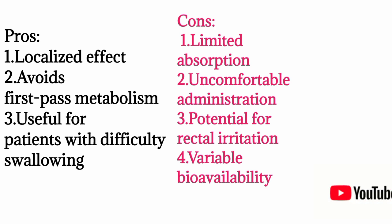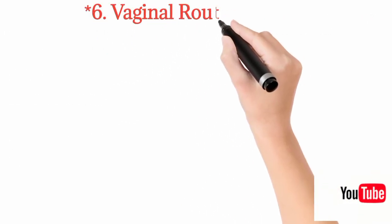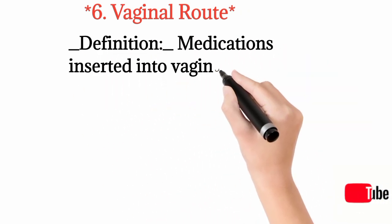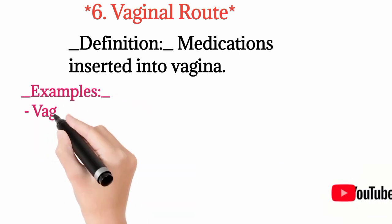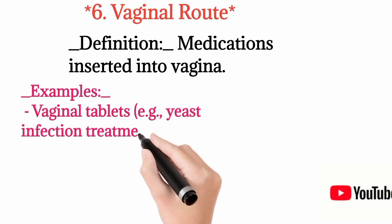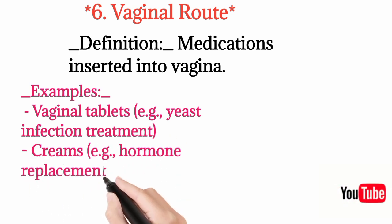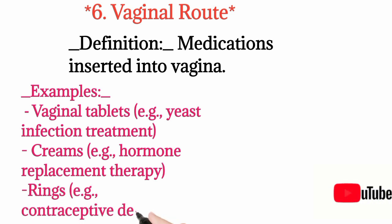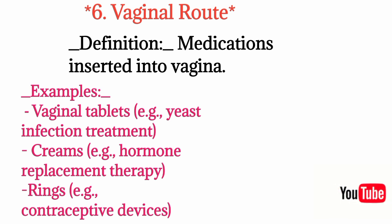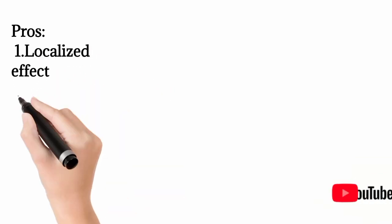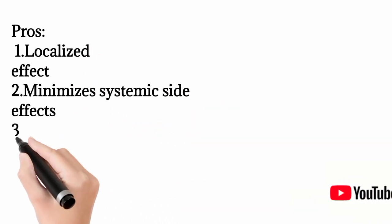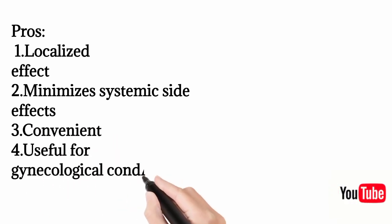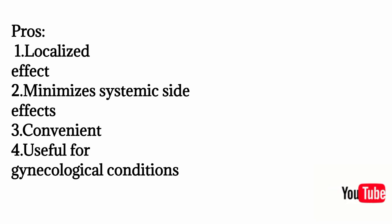Then we have the vaginal route, which simply means medications are given directly into the vagina. Examples include vaginal tablets used for yeast infections, various creams for hormone replacement therapy, and rings such as contraceptive devices that can be implanted into the vagina to release the drug and prevent conception. Advantages include a localized effect — for example, if someone has a vaginal infection at a specific site, a localized effect is needed while avoiding systemic side effects, since the drug won't be absorbed much into the bloodstream. It is convenient for achieving local effects.